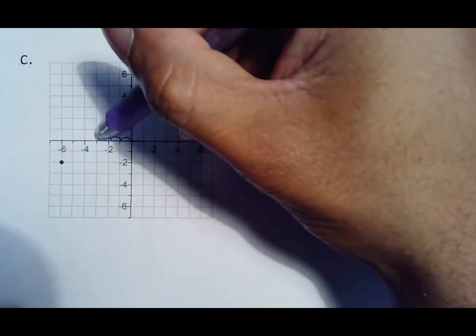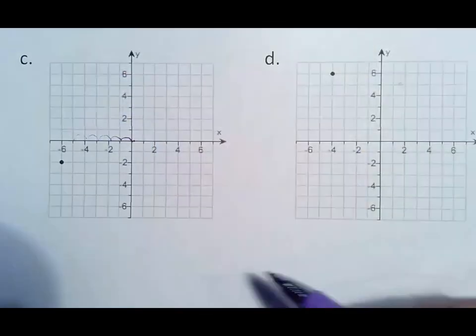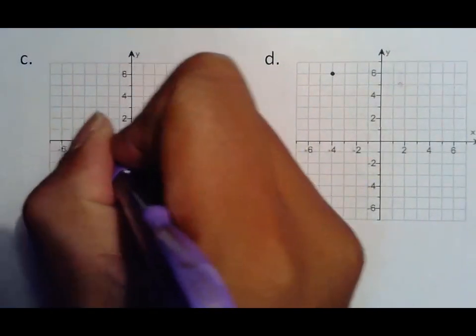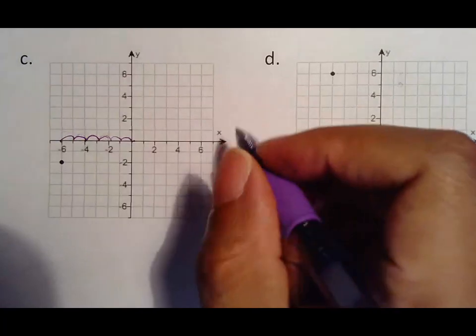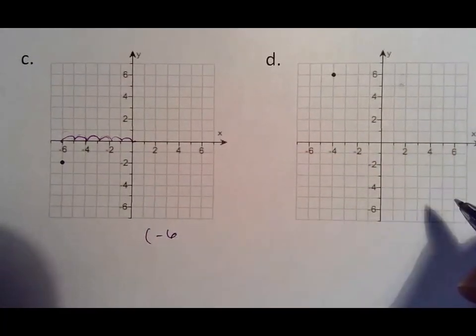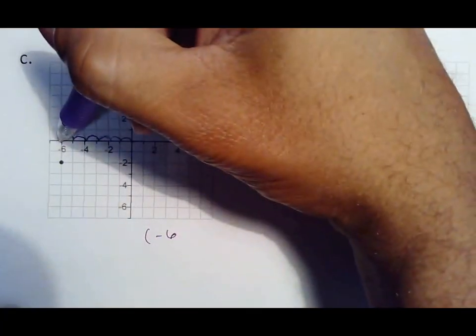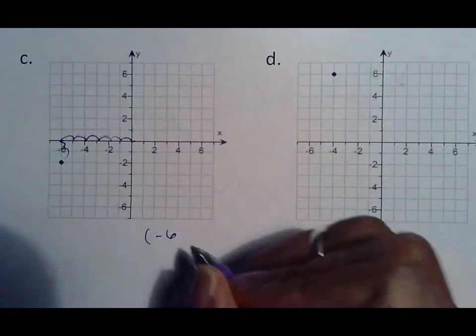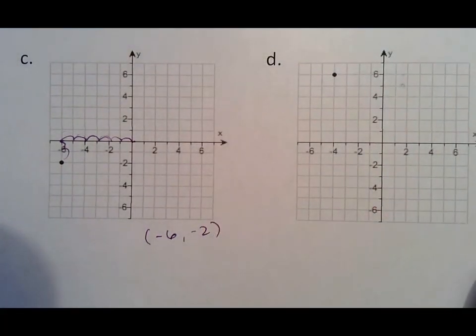But anyway 6 backwards again is negative 6 and then from there I have to go down 2 which would be negative 2.